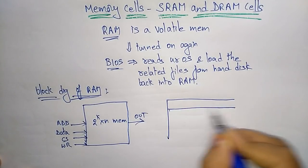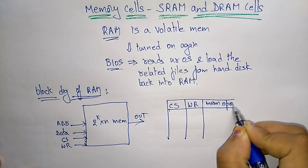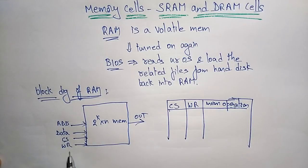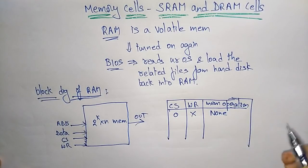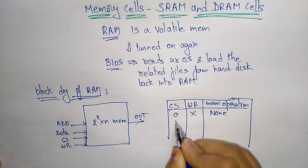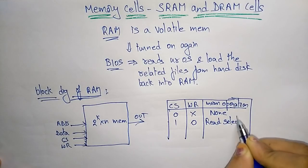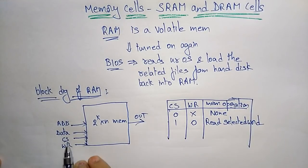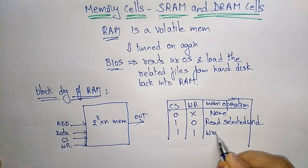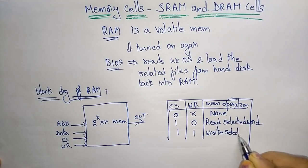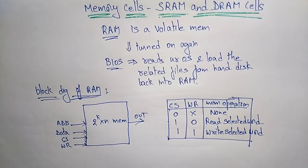Now let us see the functional table of RAM. Based on the chip selection and write pins, the memory operation is determined. If chip selection is 0 and write is don't care, no operation is performed. If chip selection is 1 and write is 0, the selected word is read. If chip selection is 1 and write is 1, the selected word is written.